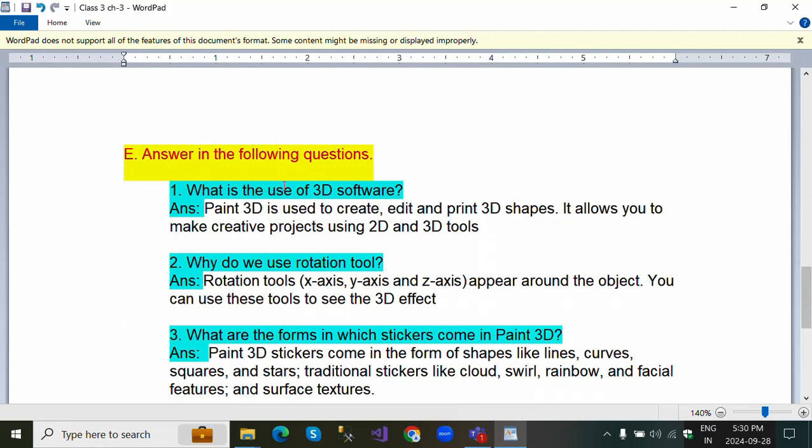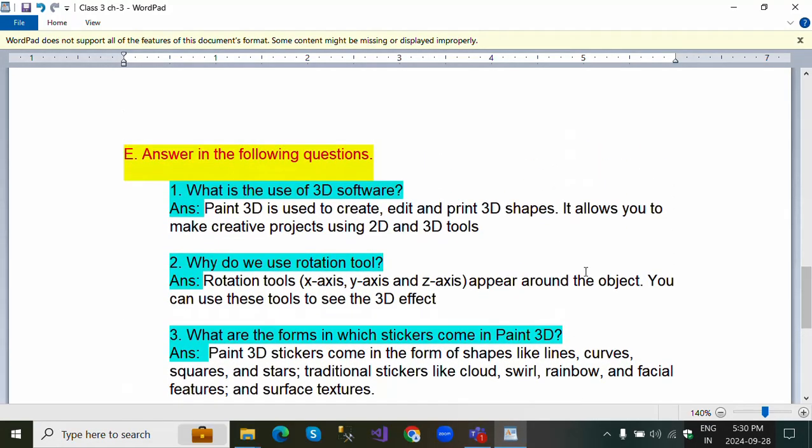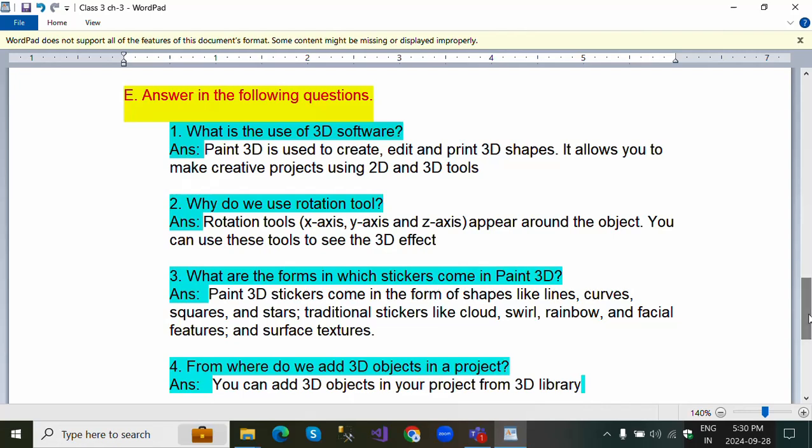Answer the following questions. First question: What is the use of 3D software? Paint 3D is used to create, edit and print 3D shapes. It allows you to make creative projects using 2D and 3D tools.